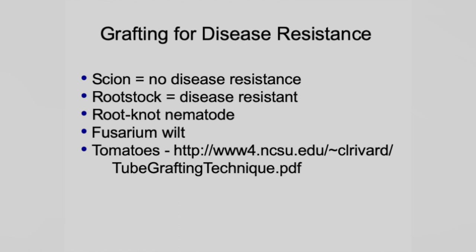Another approach to controlling root diseases like Fusarium and root knot is to graft onto disease-resistant rootstock. NC State has good fact sheets on tube grafting — you can visit their website or just Google 'grafting tomatoes.' There are rootstock varieties like Maxifort from Johnny's. If you want to grow heirlooms, they're not going to have nematode resistance or Fusarium wilt resistance. If you're going to plant them in containers, change out that soil every year or every crop cycle because heirlooms are super susceptible to these problems.